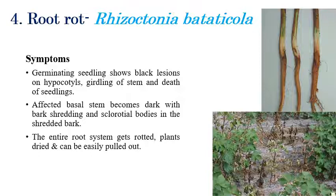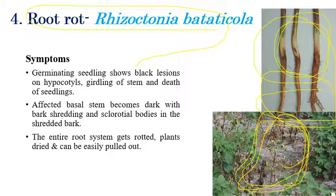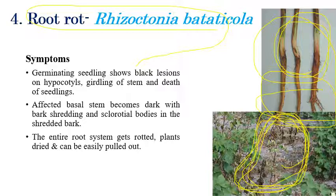The next disease is Root Rot, caused by Rhizoctonia bataticola. As the name indicates, rotting of roots occurs. Germinating seedlings can be rotted and death of seedlings can be observed. Improper germination or death of seedlings is seen along with dried stem or dried root regions. In the affected basal stem or root region, shredding of roots can be observed. If you cut open the bark region, brown or black discoloration of the stem and sclerotia formation can be seen in severe stages. The entire root system gets rotted in later stages, and the plant dies because it cannot absorb the nutrients required.